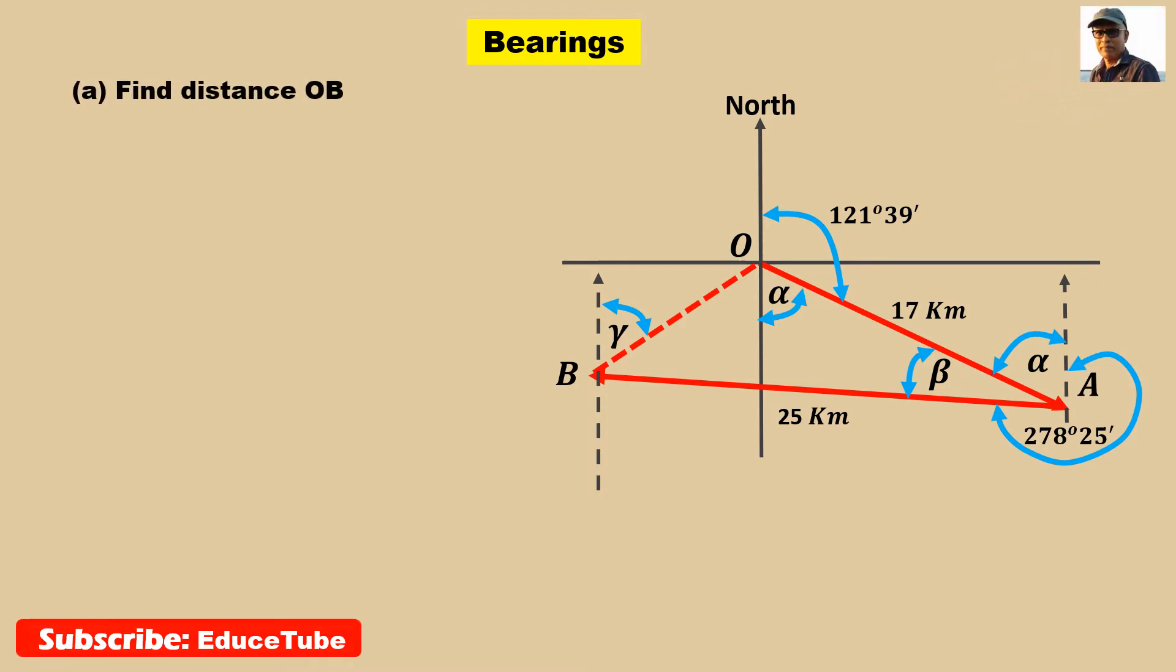To find the distance OB, we need to find angle alpha. It is very easy to find because this total angle is 180. So 180 minus 121 degrees 39 minutes, we get alpha.